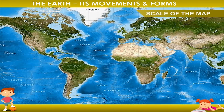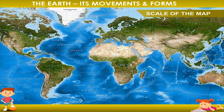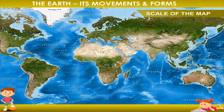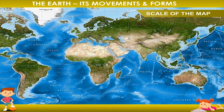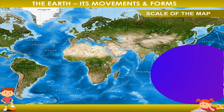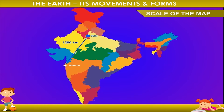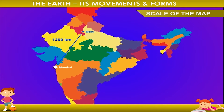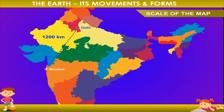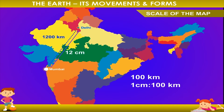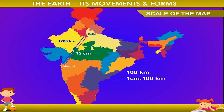Scale of the Map: We can see different places of the Earth on a map, but it is not possible to know the actual distance between two places. For example, if the distance between Mumbai and Delhi is 1200 km, it is impossible to show the actual distance on a map. Thus, 1200 km on the ground is represented by 12 cm on the map. A ratio such as 1 cm to 100 km is called the scale of the map.